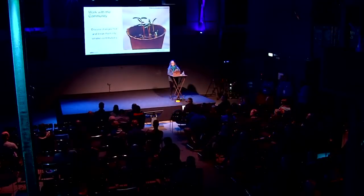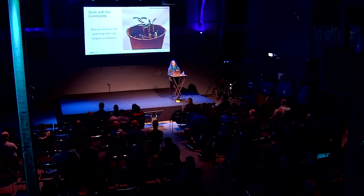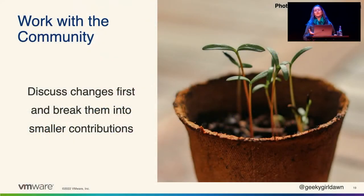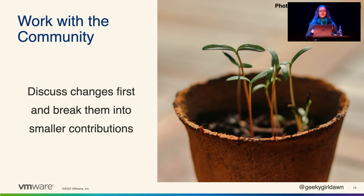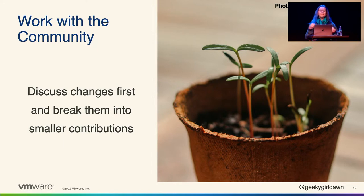Make sure you spend time discussing your proposed changes in the community before you start making them. By talking about contributions early in the process, you can get feedback on ways to architect those changes so they'll be consistent with the expectations of the project. You can also learn about anyone else who might be working in similar areas, to avoid conflicting changes that won't work together when merged. These discussions also avoid surprising people, especially for something new or big changes. It also helps to break those changes into smaller, easier-to-digest contributions — it's way easier for maintainers to find time to provide feedback on smaller contributions, and it gives you time to make corrections if something isn't quite right.